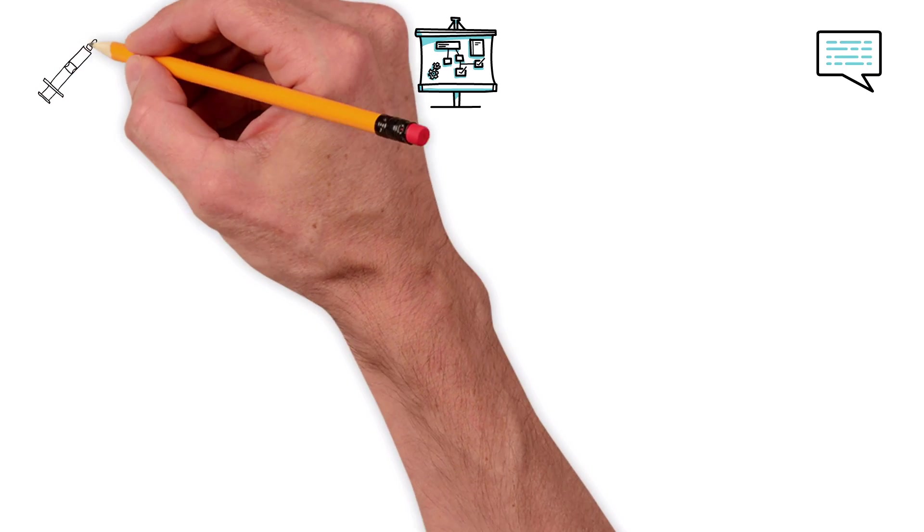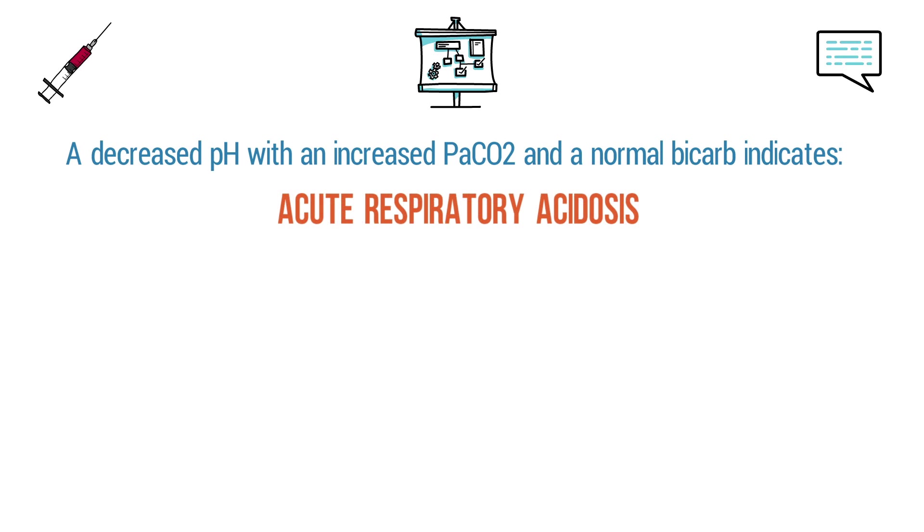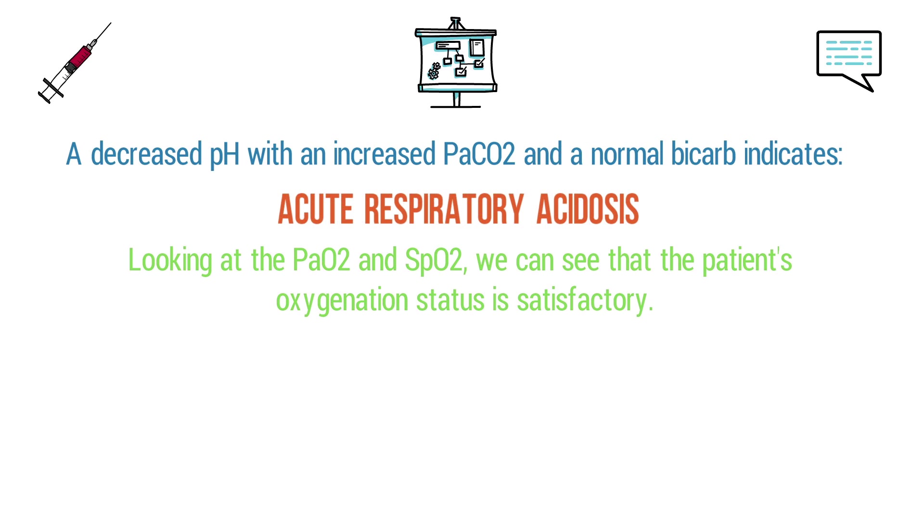Now to come up with the correct answer, the first thing we need to do is interpret the ABG results. A decreased pH with an increased PaCO2 and a normal bicarb indicates acute respiratory acidosis. And by looking at the PaO2 and SpO2, we can see that the patient's oxygenation status is satisfactory.